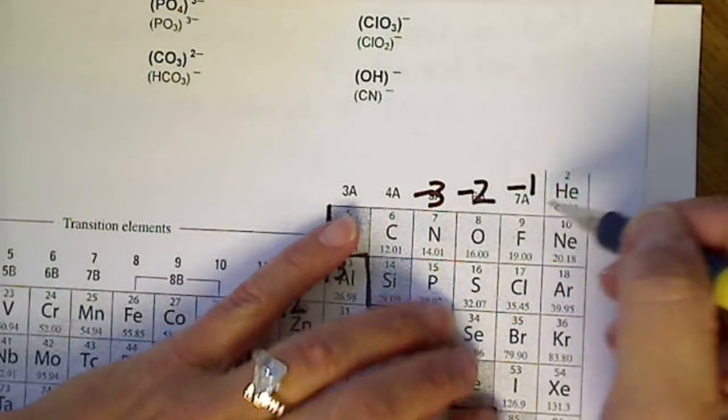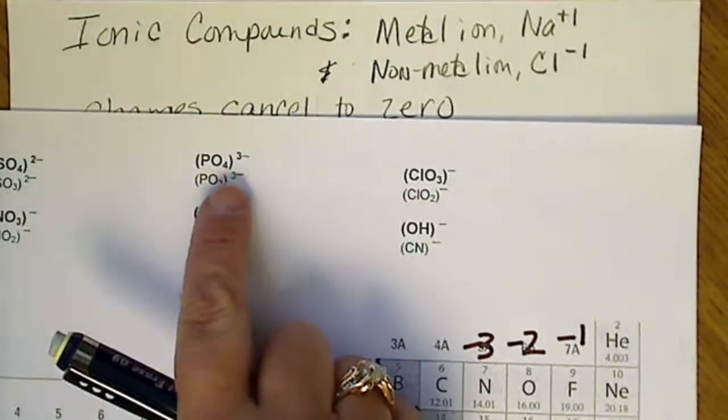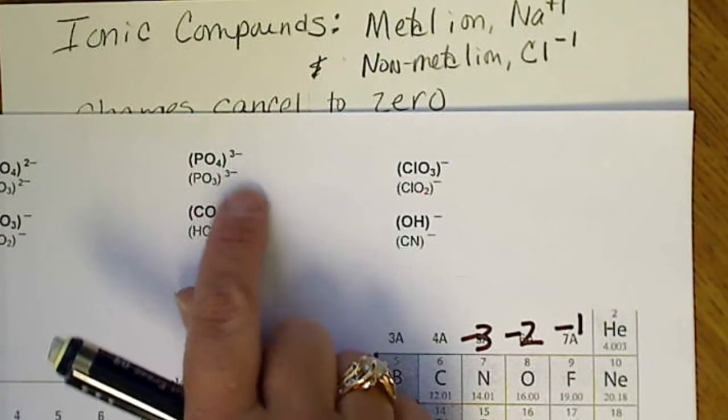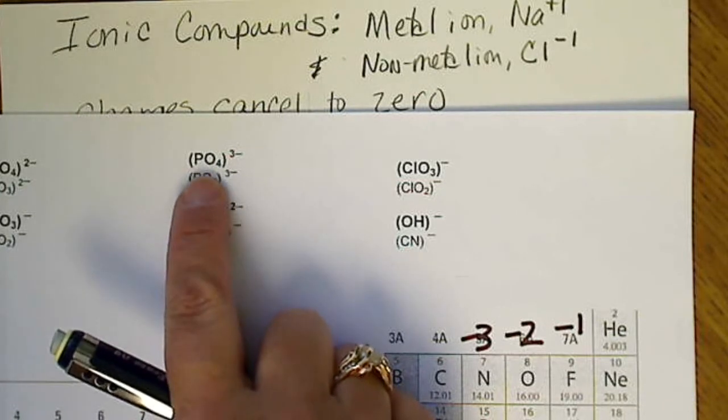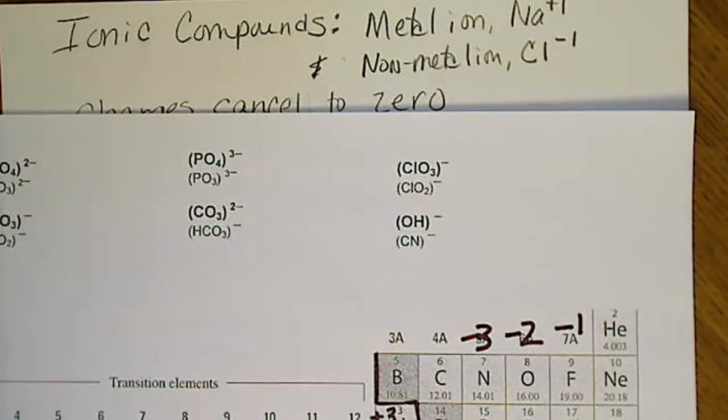We can also have another type of non-metal where it's an entire group, where the polyatomic is the entire group, and that entire group has a charge.